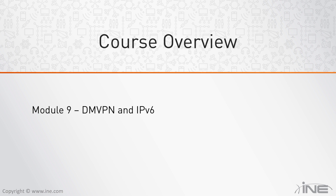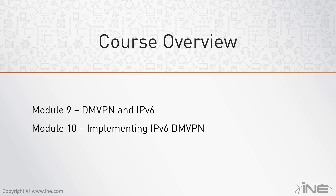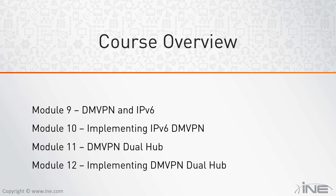As we move on, we will talk about the interoperability between DMVPN and IP version 6. I will also have an example for you showing how to deploy IP version 6 DMVPN. Finally, we will take a look at the redundancy option for this technology, which is known as dual hub, and we will also look at its configuration — specifically a dual hub, dual cloud deployment.